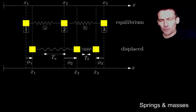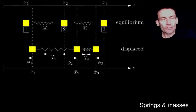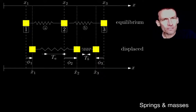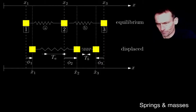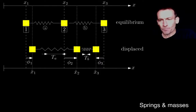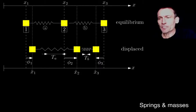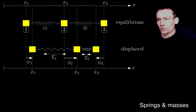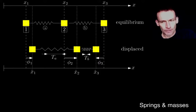We're going to reappraise it using our framework. What you can see there are three masses just sitting on a table — imagine they're sitting on a frictionless table, so forget about gravity for now. We're looking down at three masses connected by springs A and B. What you're looking at is both an equilibrium configuration and then what I call a displaced configuration.